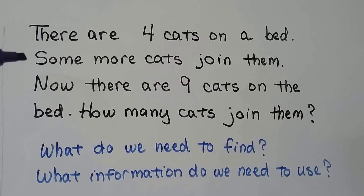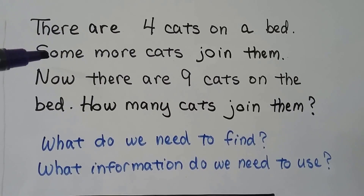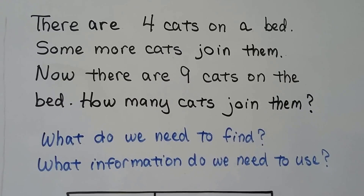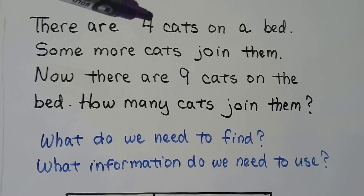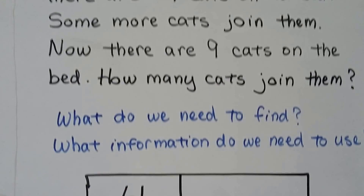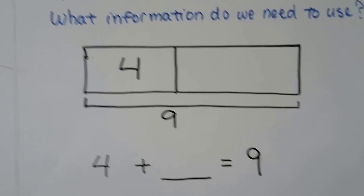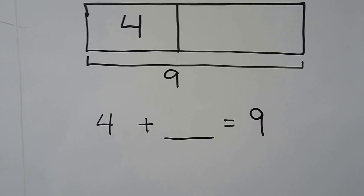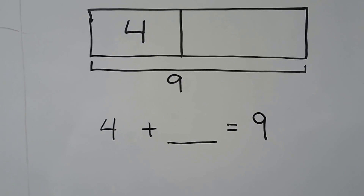Here it says some more cats join them — that's what we need to find. What information do we need to use? There are four cats on the bed and now there are nine. Four plus something is going to equal nine.